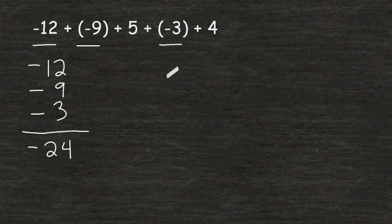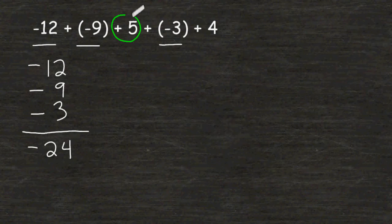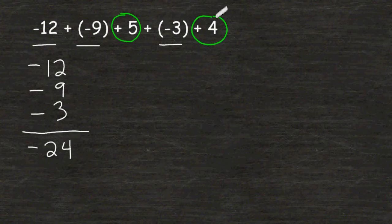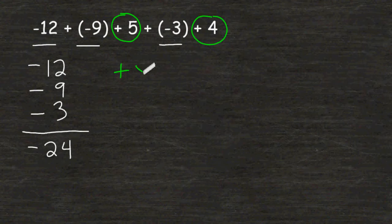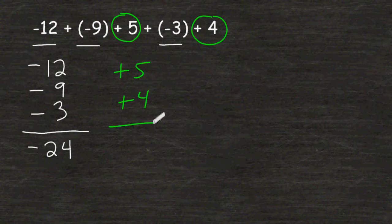Now let's combine all of our positives together. We have a positive 5 right here, and a positive 4 right here. So when we combine 5 with 4, that is a total of positive 9.